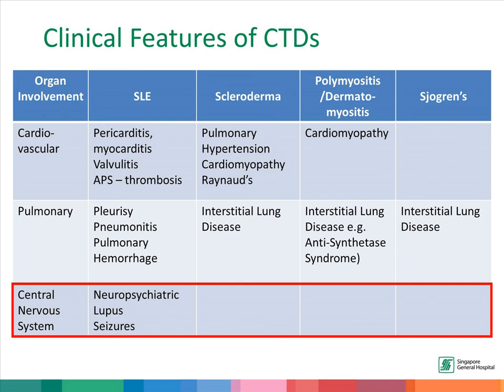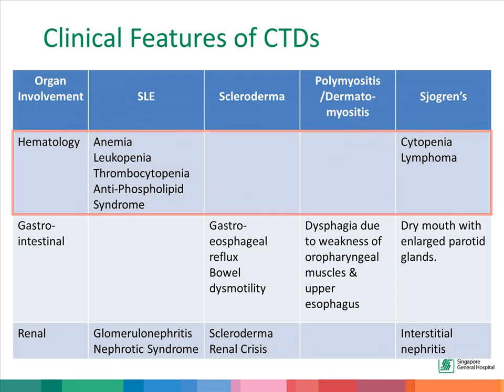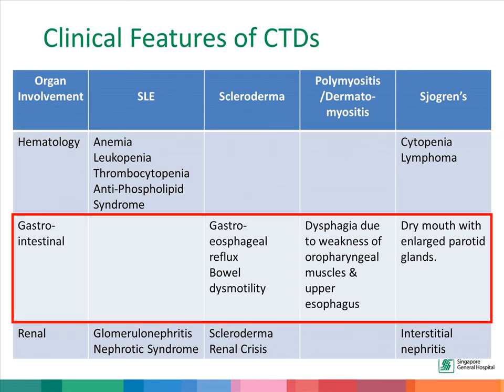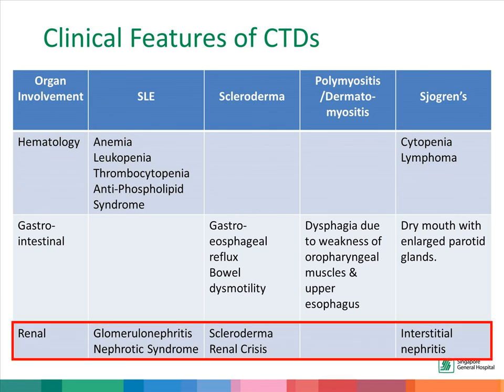As for central nervous system involvement, it is the SLE patient who suffers neuropsychiatric symptoms, seizures, or strokes. The blood cells are affected in SLE and Sjogren's; in both conditions all three cell lines may be low. There is gastrointestinal involvement in scleroderma, causing gastroesophageal reflux and malabsorption. The patient with myositis may have difficulty swallowing due to weak oropharyngeal muscles. The patient with Sjogren's has dry mouth, leading to dental caries and difficulty eating dry food. Renal involvement in SLE is very serious, with glomerulonephritis or nephrotic syndrome; scleroderma patients may suffer renal crisis, and Sjogren's patients may have interstitial nephritis.